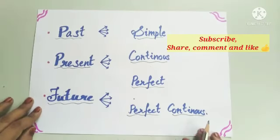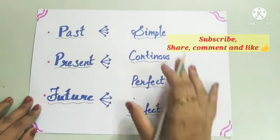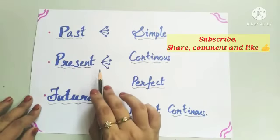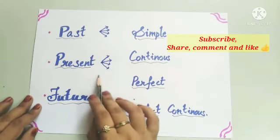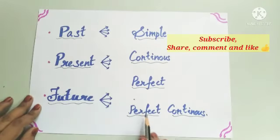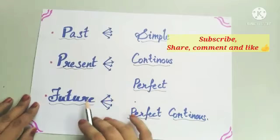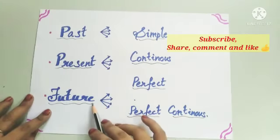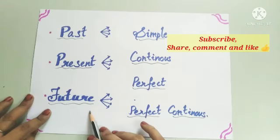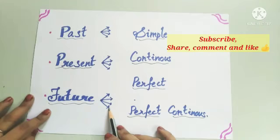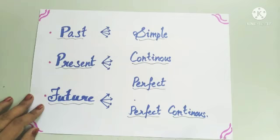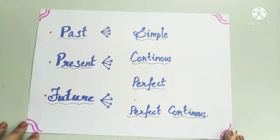Coming to present tense: simple present, present continuous, present perfect, and present perfect continuous. The next one is future tense, also divided into four kinds: simple future, future continuous, future perfect, and future perfect continuous. So these are the total 12 kinds of tenses.